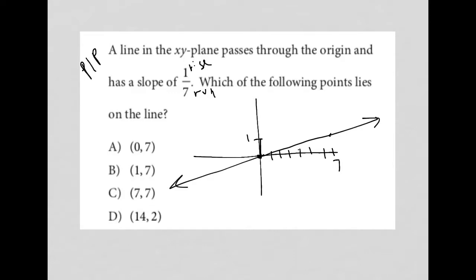So which of the following points lies on the line? Now that I have a visual representation of what the question describes, I can just test out each option.